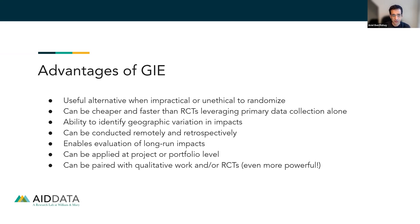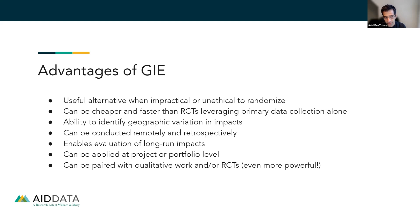Putting all of these together can often get us a rigorous design, even when it's impractical, unethical, or not feasible to randomize. Partly because we're often using secondary data that's already been collected, this can be cheaper and faster than primary data collection over a multi-year period. We can often do things retrospectively and remotely, contributing to lower cost. Because we also often have larger scales of data — whether remotely sensed or survey-based — that lets us better study geographic variation in impacts, do real heterogeneity analysis, and understand how different parts of a country might be benefiting from a particular intervention.